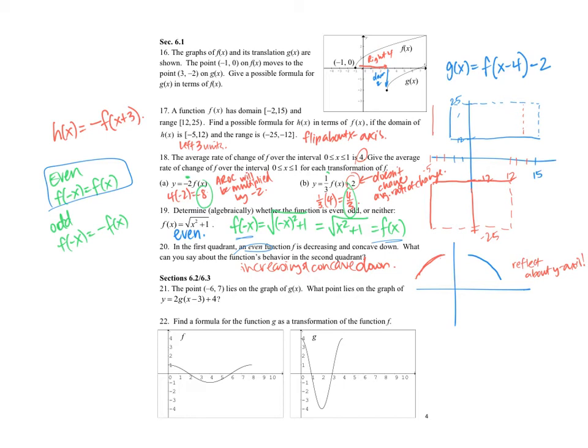So let's plot that point. The point negative 6, 7 lies on the graph g of x. What point lies on the graph of that one? So let's plot that point, negative 6, 7. And so what kinds of transformations are going on here? Let's start with this stretch here because I think that'll be easiest. So we'll have negative 6, 14. So I've got that up here. So that's the stretch. Then we'll deal with this, which is moving to the right 3 units. So we'll go to the right 3 units, so it'll be negative 3, 14.